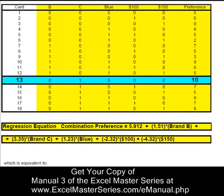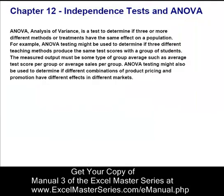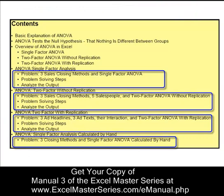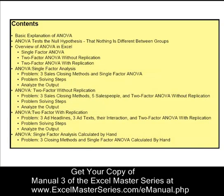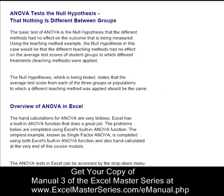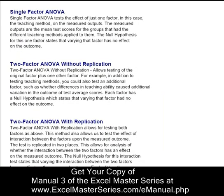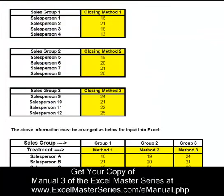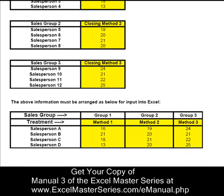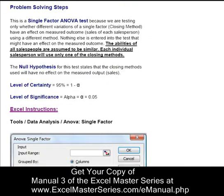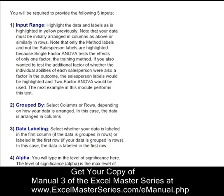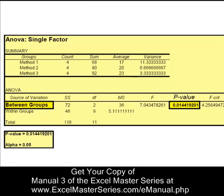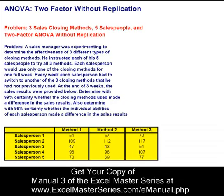The second section is independence tests using the built-in ANOVA functions. There are three major ANOVA functions built into Excel, and we walk through problems showing each one of those. At the end of this, we show a hand calculation of the ANOVA function. We show step-by-step with screenshots walking through the first one and the output — everything is color-coded, and we walk through the output so you can understand it.